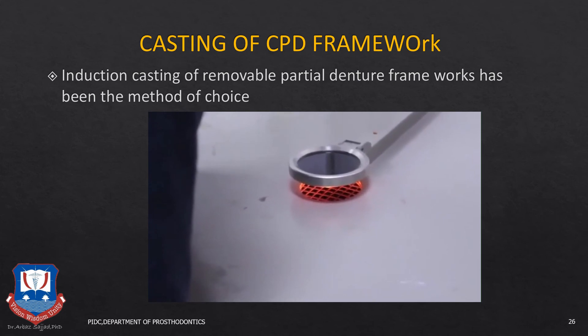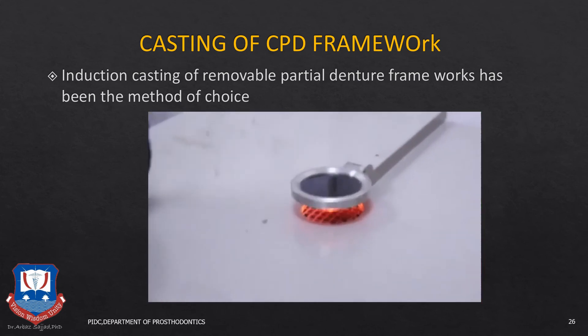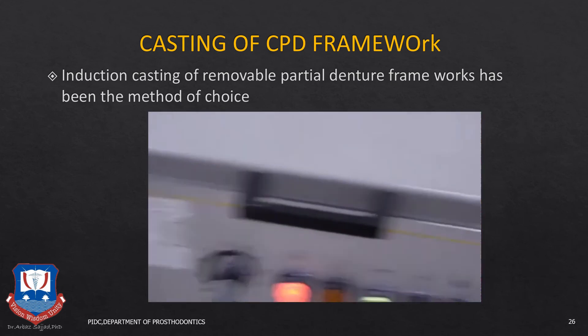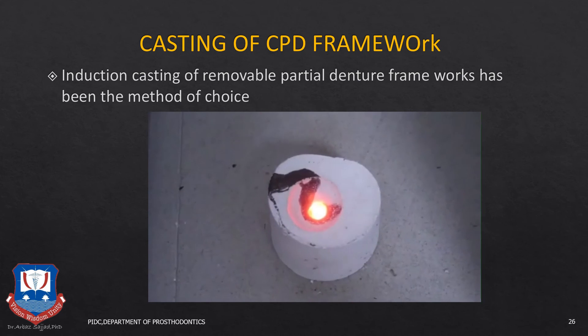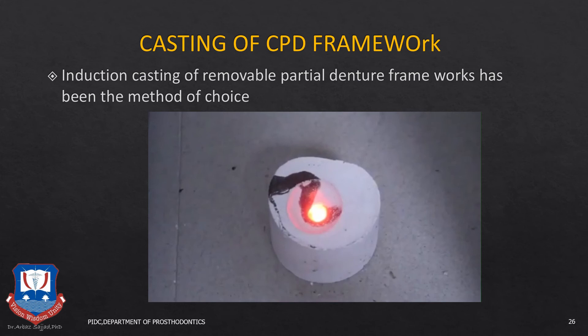Once the metal has reached casting temperature, the mold is placed and induction casting is triggered. Once the metal pellets have melted, the mold is removed from the casting machine and allowed to cool down according to the manufacturer's instructions. Centrifugal force is created and the molten metal pellets are forced into the mold. The mold is then allowed to bench cool for a couple of hours depending on the manufacturer's instructions for the alloy material. CPD frameworks are usually cast in chrome cobalt alloys because of their strength and rigidity.